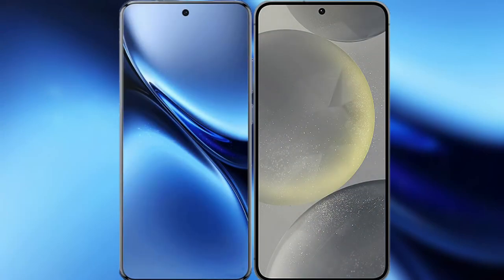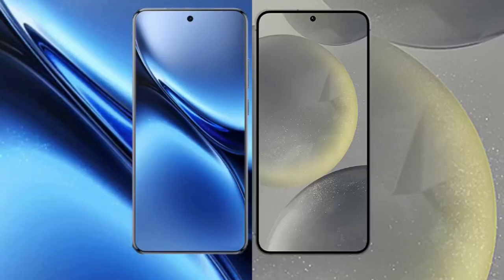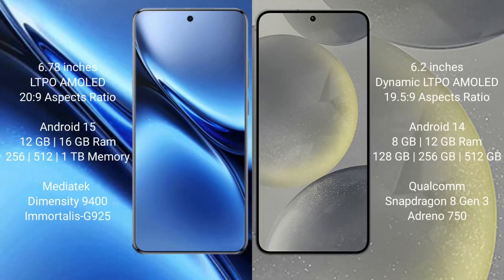I will compare the new Vivo X200 Pro with Samsung Galaxy S24. Vivo X200 Pro features a 6.78-inch LTPO AMOLED display and Snapdragon 20-9. Samsung Galaxy S24 features a 6.2-inch Dynamic LTPO AMOLED display and Snapdragon 19-5-9.